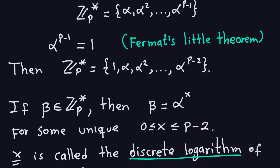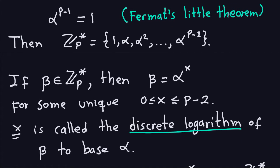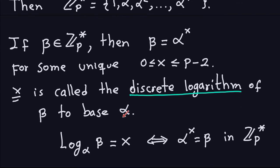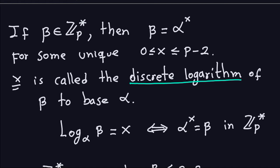As we said in the first video of this sequence, an exponent is a logarithm — and that's what the discrete logarithm means here. This x is called the discrete logarithm of beta to base alpha. We write it as log base alpha of beta equals x. That means x is the exponent that alpha needs to equal beta, i.e., alpha to the x is equal to beta, all modulo p because we are working in this group.